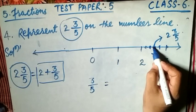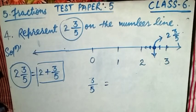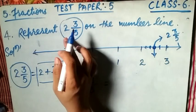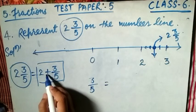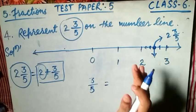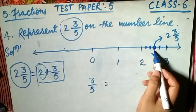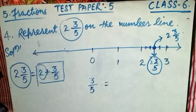This point represents 2 and 3/5. That is your answer. To summarize: to represent a mixed fraction on the number line, draw the number line and mark positive numbers 0, 1, 2, 3. Since 2 and 3/5 equals 2 plus 3/5, it is greater than 2 but less than 3. Divide each unit into 5 equal parts and mark 3 parts past 2. That point is 2 and 3/5.